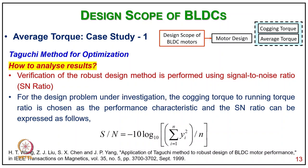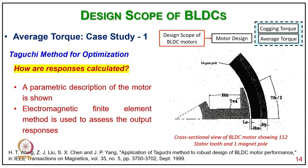Analytical means (ANOM) and variance (ANOVA) techniques are used for optimal setting of the parameters. Verification of the robust design method is performed using signal-to-noise ratio. For the design problem, the cogging torque to running torque ratio is a non-performance characteristic. The S/N ratio can be expressed as: S/N = −log(1/n × Σ(yi²)), where i runs from 1 to n. The question is how the responses are calculated.